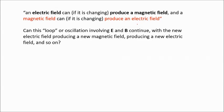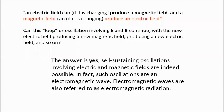Can this loop of oscillation involving electric and magnetic fields continue — a new electric field producing a new magnetic field, producing a new electric field, and so on? The answer is yes. Self-sustaining oscillations involving electric and magnetic fields are indeed possible. In fact, such oscillations are an electromagnetic wave. Electromagnetic waves are also referred to as electromagnetic radiation.